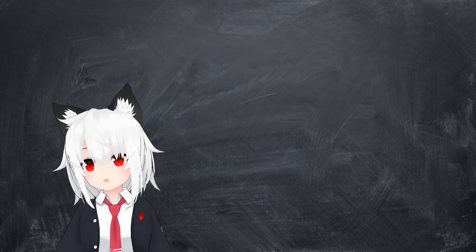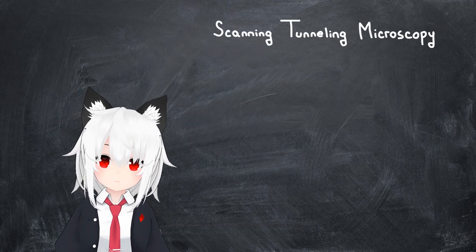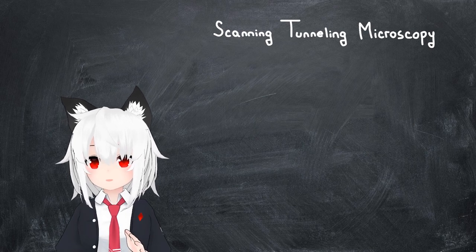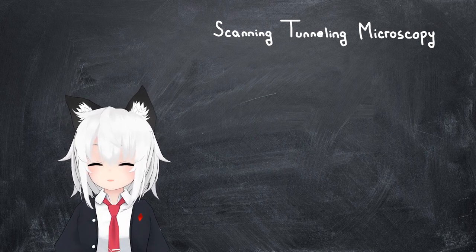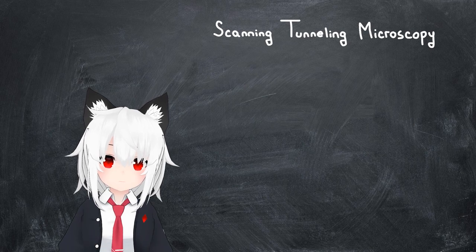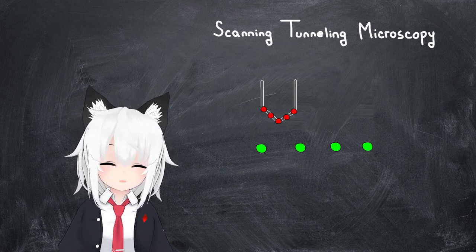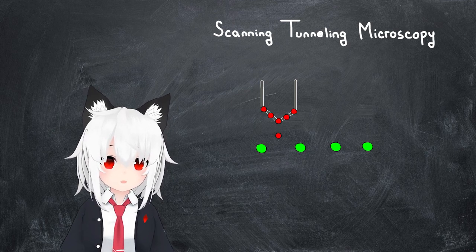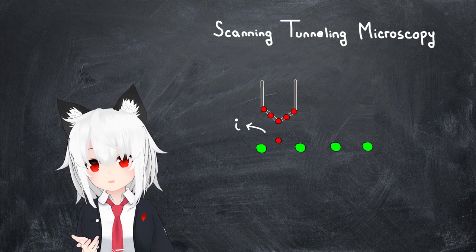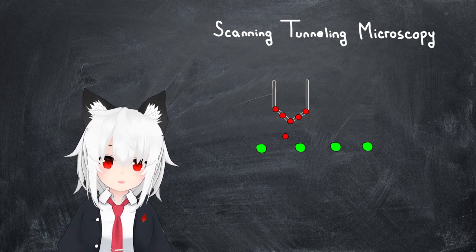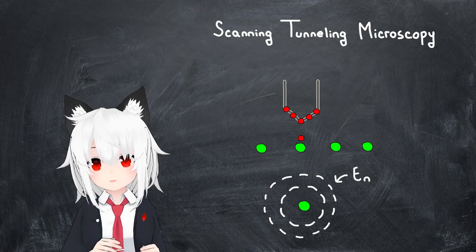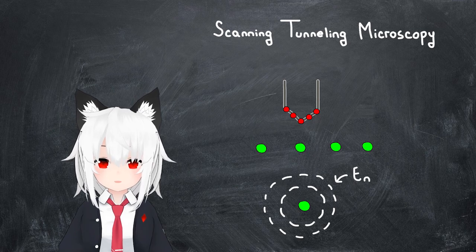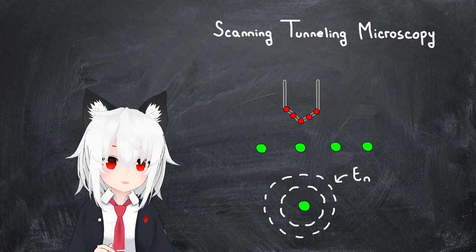The first comes from what's called scanning tunneling microscopy. The idea here is that the quantum mechanical tunneling probability of electrons across a potential energy barrier is directly related to the number of states on the other side. So if you bring an electrically charged tip close enough to the surface of a material, this means that the tunneling probability, and therefore the measured current from the tip, should get larger as you approach an atom, being that atoms have a large number of available quantum energy states.